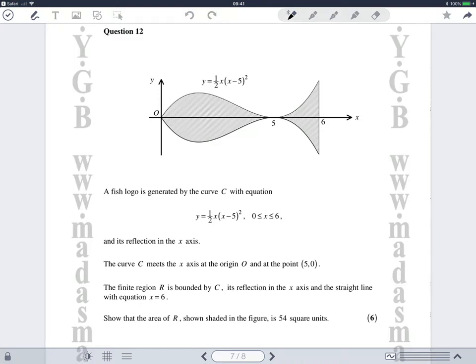Okay, question 12 for the MalusMaths.com MP1 paper, paper N. We're told that a fish logo is generated by the curve C with equation y equals a half x times by x minus 5 all squared and its reflection in the x-axis and the curve C meets the x-axis at the origin at the point five zero.